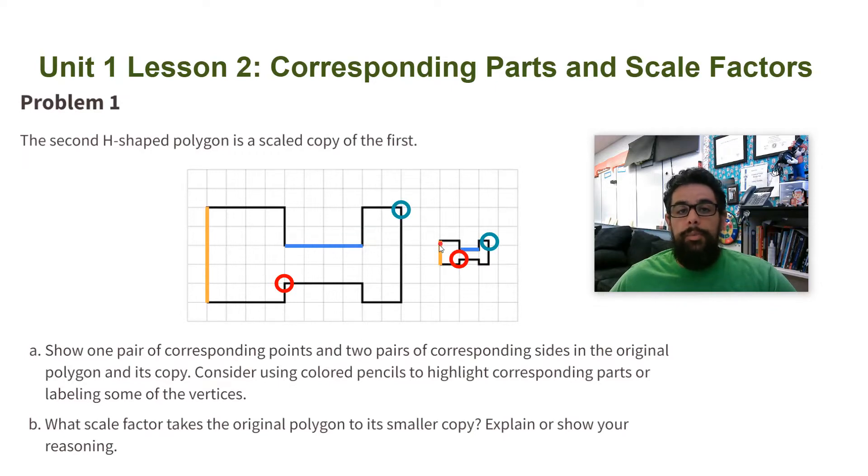So when you're doing this, color code them your own color. Now we're going to do part B. What is the scale factor that takes the original polygon to its smaller copy? Explain or show your reasoning.